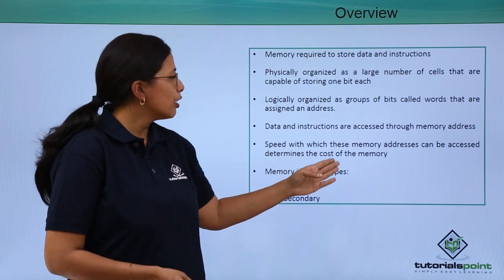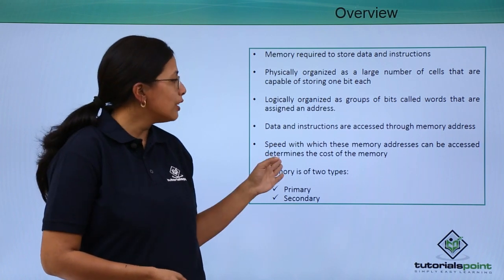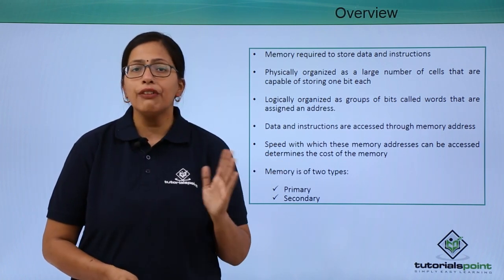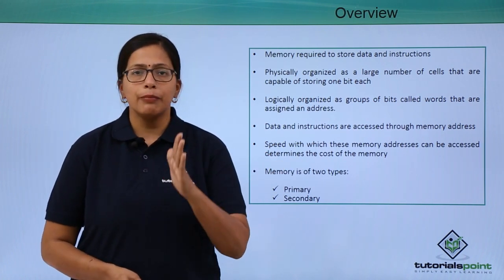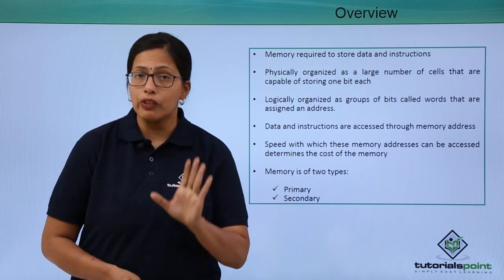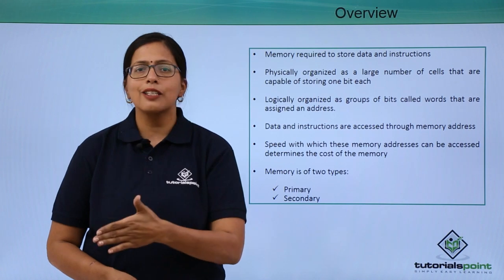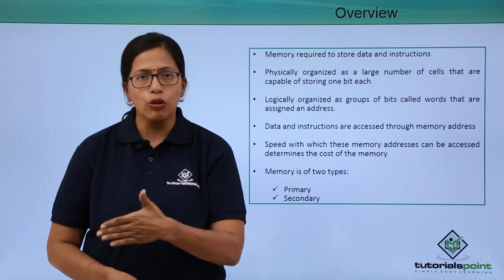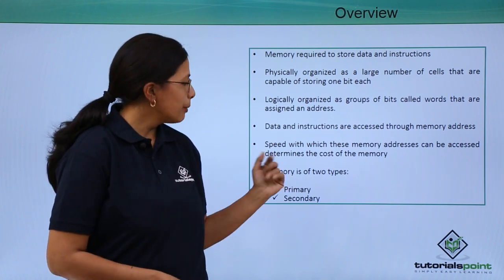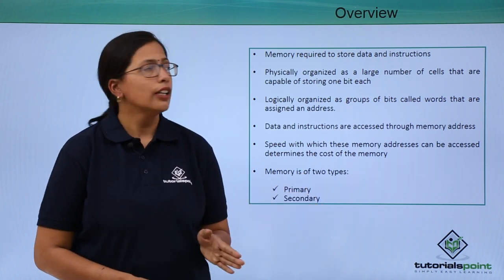The speed with which these memory addresses can be accessed will determine the cost of the memory. If it can be accessed very fast, then that type of memory will be more expensive. If the access speed is slow, then it will be cheaper. Memory is of two types: primary and secondary.